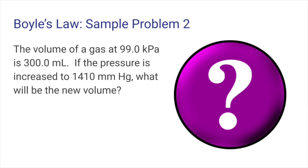Here's a second problem that can be solved with Boyle's law. The volume of a gas at 99.0 kilopascals is 300.0 milliliters. If the pressure is increased to 1410 millimeters of mercury, what will be the new volume? Pause the video here and solve the problem yourself.